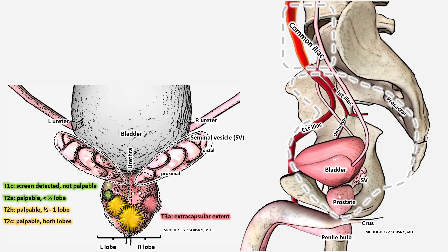A T3A cancer is one that has extracapsular extent — the cancer is going through the peel or rind of the clementine. Notably, this is actually very difficult to feel on a rectal exam, and rectal exams are really subjective. Most physicians cannot reliably detect T3 disease. Men can sometimes have other imaging done, like an MRI or a PET scan, to help with staging. However, MRI should not be used to assign the clinical T3 stage because it upstages men — assigning a higher stage than they normally would be — and their treatment recommendations become much more intense and more toxic.